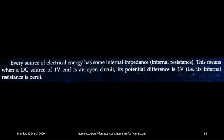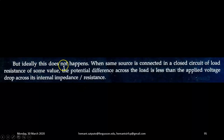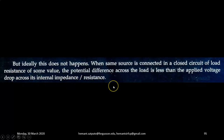Now let's see the next concept: internal impedance of a source. Every source of electrical energy has some internal impedance, which is also called internal resistance. When a DC source of 1 volt EMF is on open circuit, its potential difference is 1 volt, meaning its internal resistance is 0. But ideally this does not happen. When the same source is connected in a closed circuit with a load resistance, the potential difference across the load is less than the applied voltage, due to the voltage drop across its internal impedance or internal resistance.